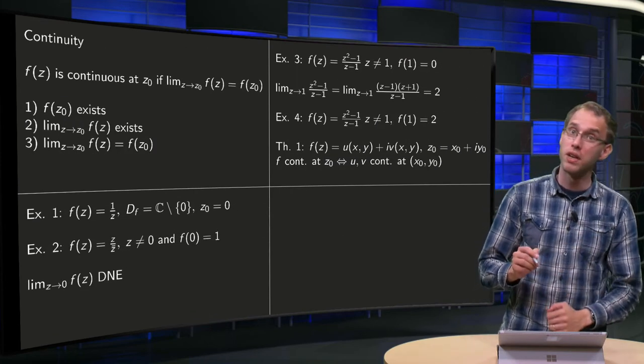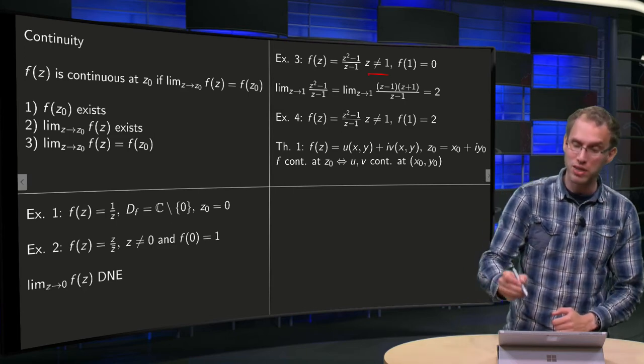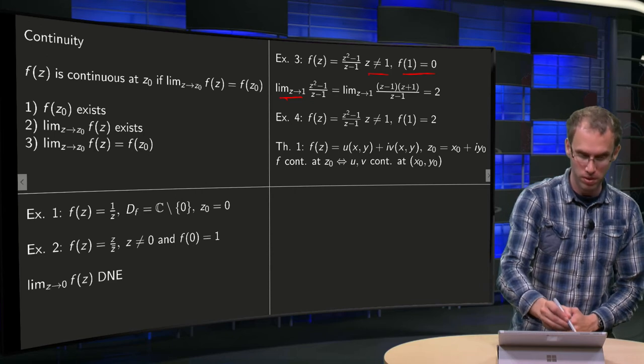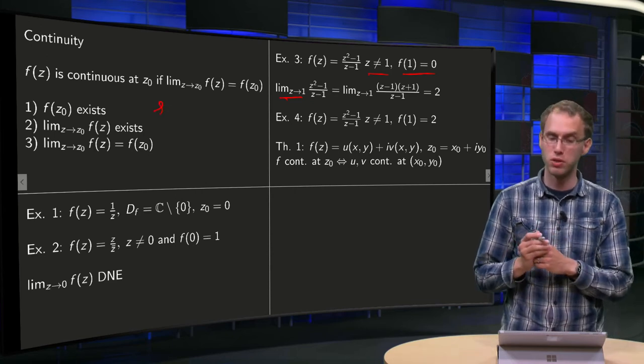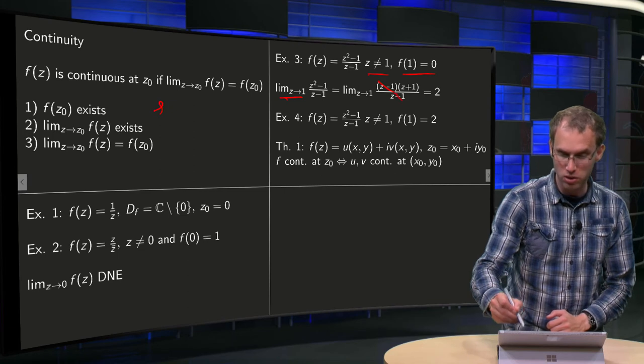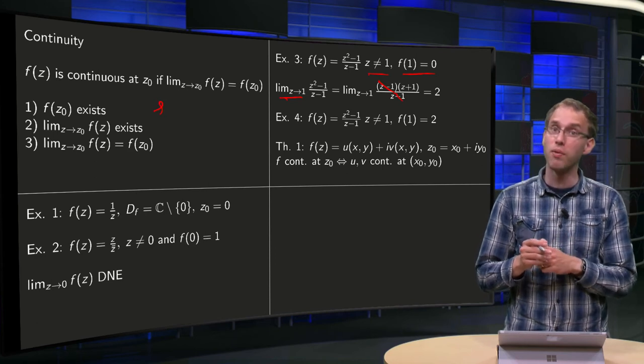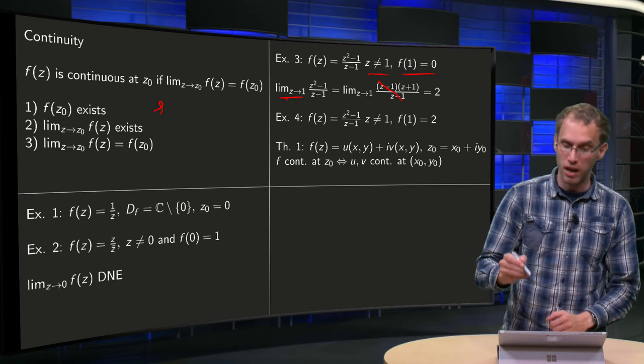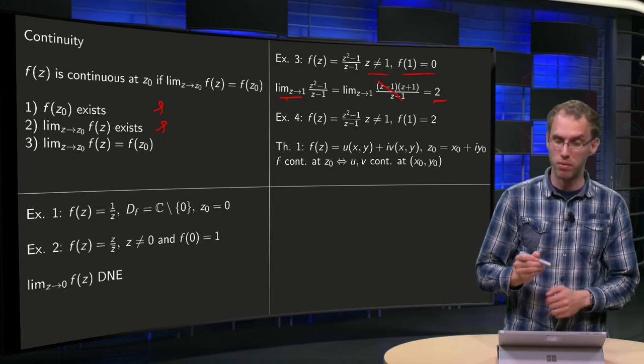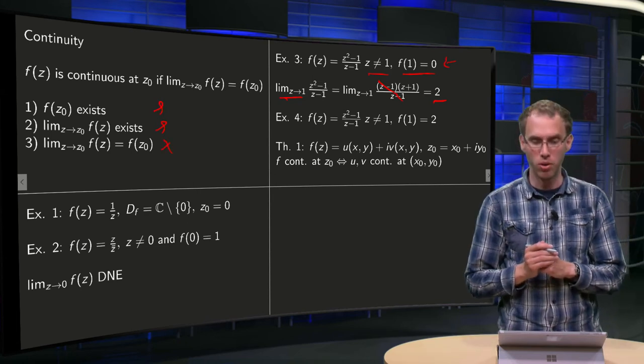The third example: the function (z²-1)/(z-1), obviously for z ≠ 1, otherwise we're dividing by 0, and we set f(1) = 0. What happens if we compute the limit as z→1? This one is okay. You see z²-1 = (z-1)(z+1). We can cancel those out because we're in a limit, so z ≠ 1. We eliminate those and are left with z+1, and we can take the limit equals 2. So the limit exists. However, the limit is not equal to the function value at 1, which was defined to be 0, which means the third statement does not hold.